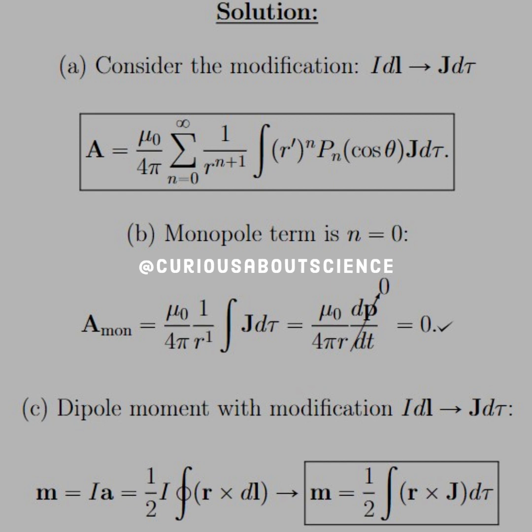Now, the monopole term is when N equals zero. Here's where we have the fun. So we plug it in. The summation is just, we don't have to really worry about it. It's just N equals zero to zero, so it's just the first thing. So we note that the R prime term and the P_N term go to one each, so we're just left with the integral of J D tau. And of course, we have one over R in the front of that.